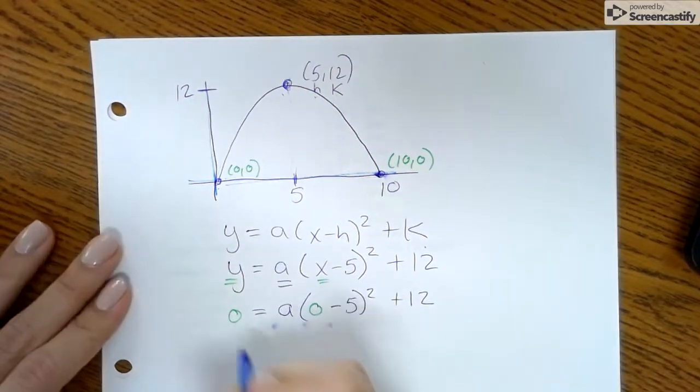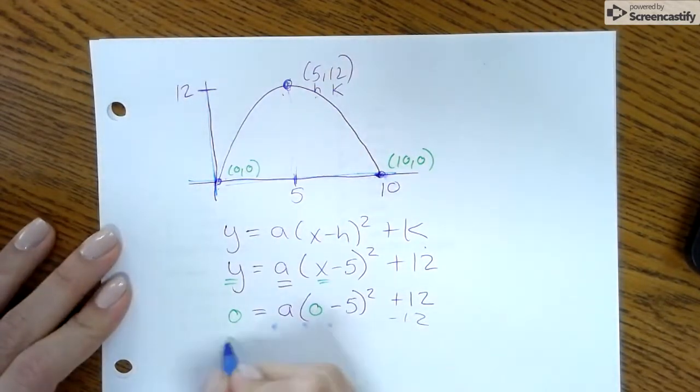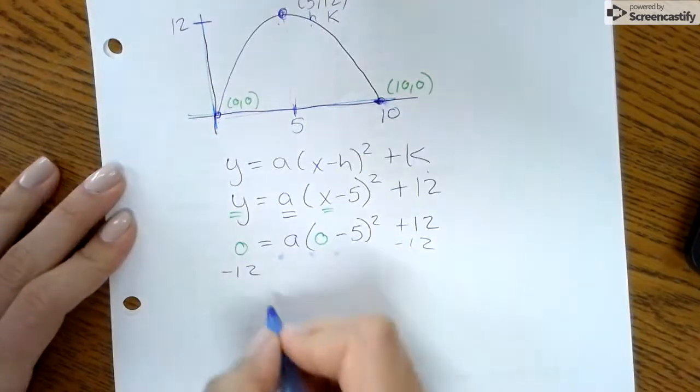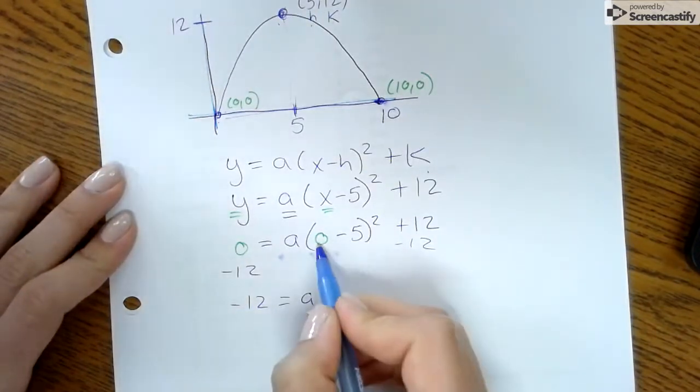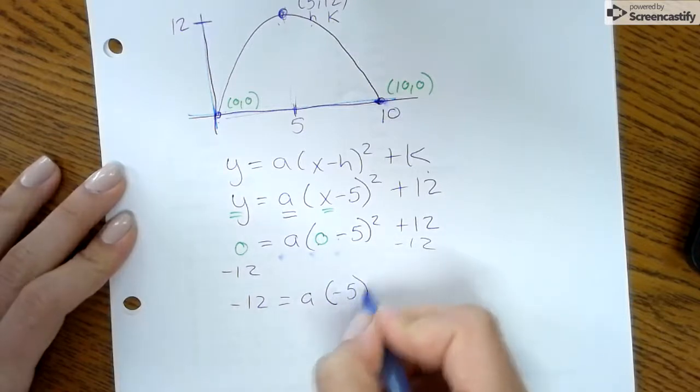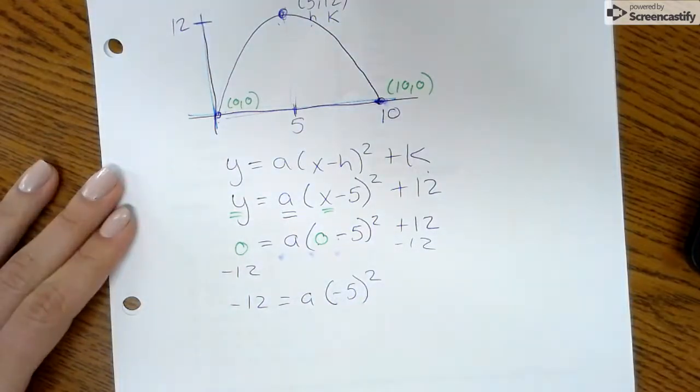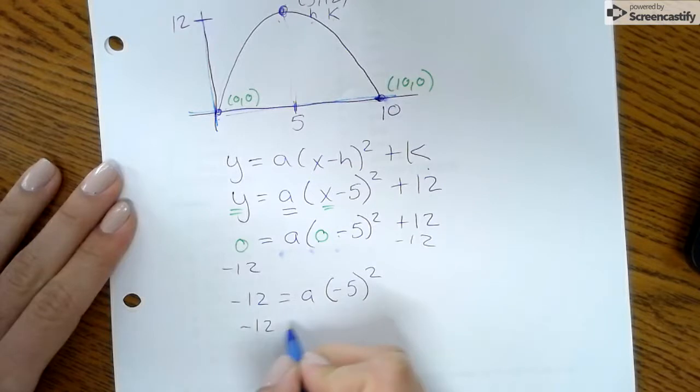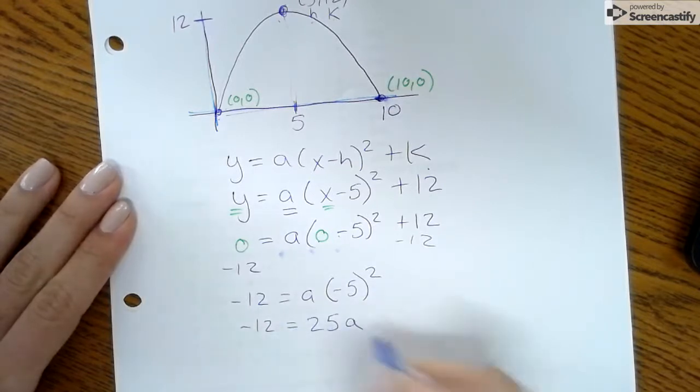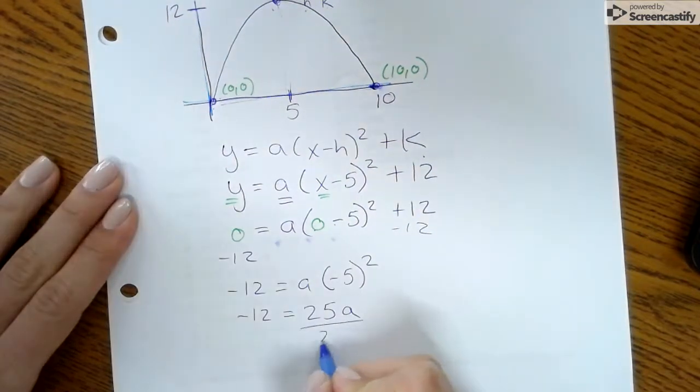And then I'm going to solve from here. So I'm going to subtract 12 from both sides, so I get -12 equals a times (0 minus 5), which is -5.